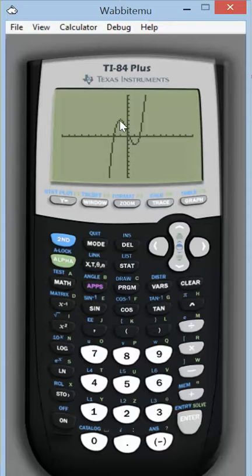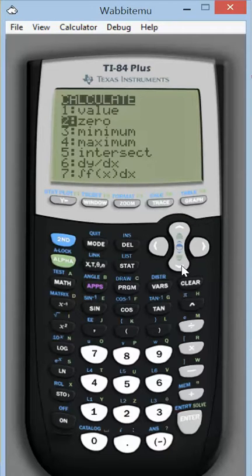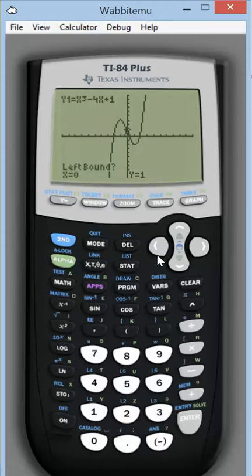Let's start with the local maximum. What you want to do is hit second trace and choose option 4. For your left bound, you want to go to the left of the high point. Somewhere right there is good enough. You can go ahead and hit enter.